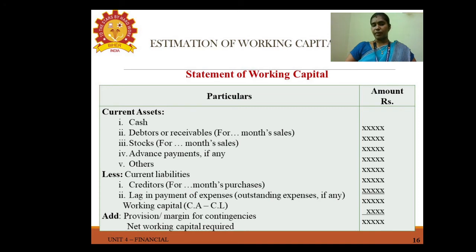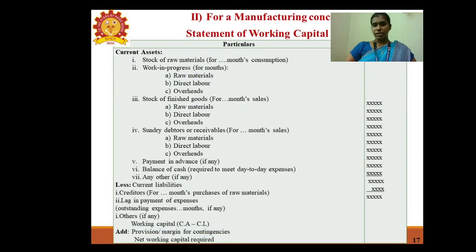Estimation of working capital requirement is a statement of current assets less current liabilities and provisions or margins of contingency. Current assets include cash, debtors/receivables, stocks, advance payments, and others. Current liabilities include creditors and lag in payment of expenses. Adding provision or margin of contingencies gives the net working capital required. For a manufacturing concern, the calculation includes stock of raw material, work-in-progress, finished goods, sundry debtors, payments in advance, and cash, less creditors and lag in payments.